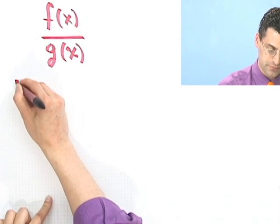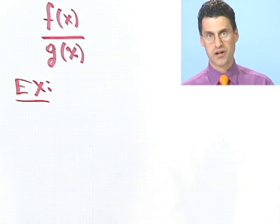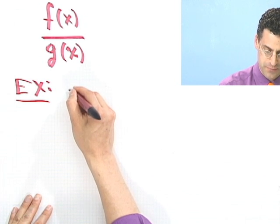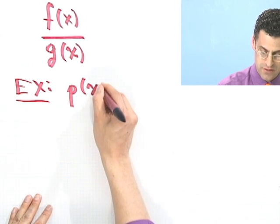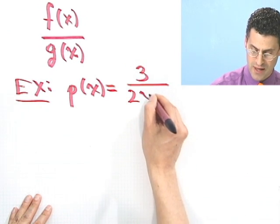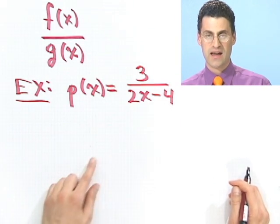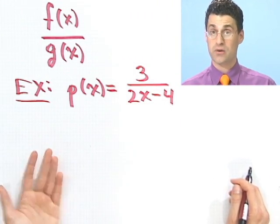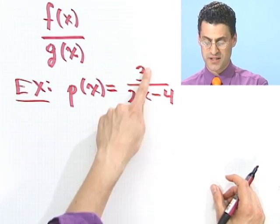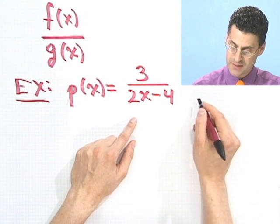Because vertical asymptotes are basically just where the bottom is zero. But you have to remember to make sure you cancel everything first, and I'll show you the caution of that and why that's important. Let's start with an example. So the question here is not to graph, let's just find the vertical asymptotes. Suppose we have a function p of x, 3 divided by 2x minus 4. I want to know, where does this have a vertical asymptote, if anywhere?